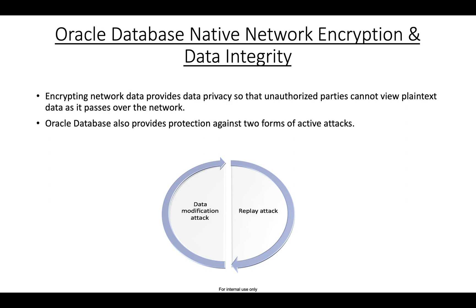NNE comprises of two things: encryption and also data integrity. Encrypting the network data provides data privacy so that unauthorized parties cannot view the plain text data as it passes over the network. As I gave you the example — if you are a client asking the server to send some data, that data would actually be sent in plain text format, and anybody can grab those packets and look into the customer data.